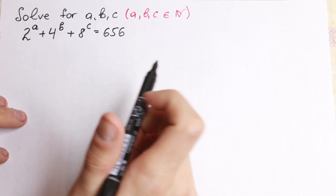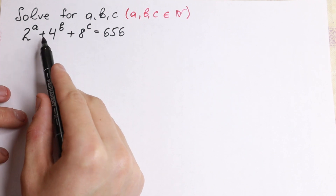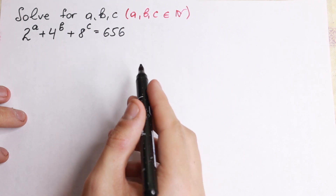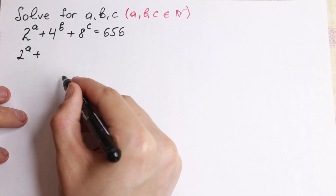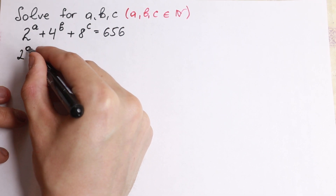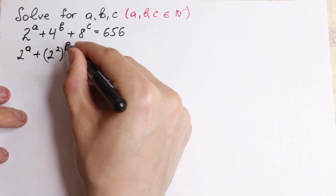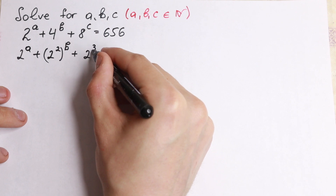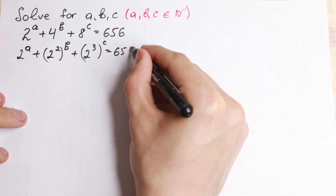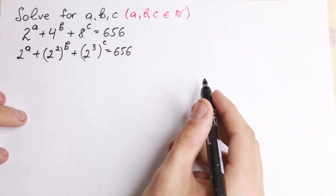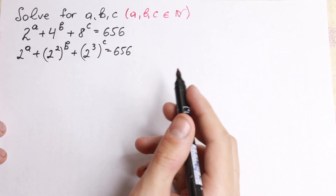How can we solve it? At first sight this question looks really hard, but take a look closely. Notice 2, 4, 8. We can easily rewrite it as 2 to the a, plus 4 written as 2 squared to the power b, plus 2 cubed to the power c, equal to 656. So we just write it in another way using base 2.